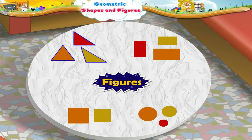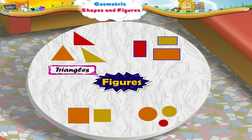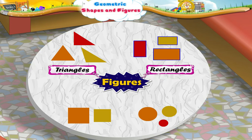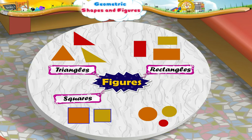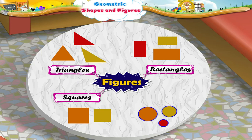These are triangles. These are rectangles. These are squares. And these are circles.